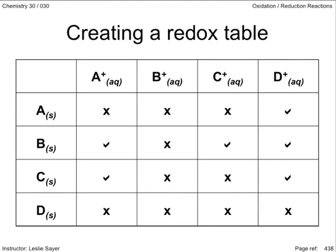Along the top row, there are four hypothetical ions. Down the first column, hypothetical metals. The cells of the data table contain either an X, meaning no reaction takes place between metal and ion, or a checkmark, meaning a reaction does take place.